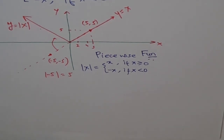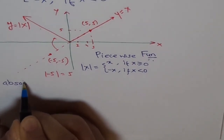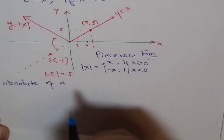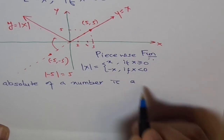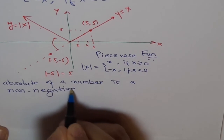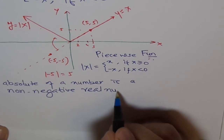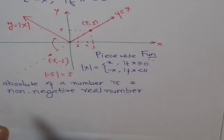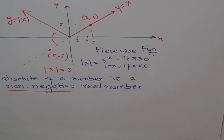So what is absolute X? The absolute of a number is a non-negative real number. This is important — what you are always expecting as output is a non-negative real number. That is what absolute fundamentally means.